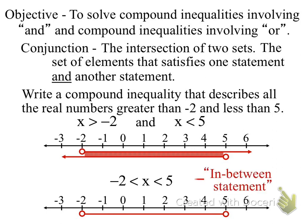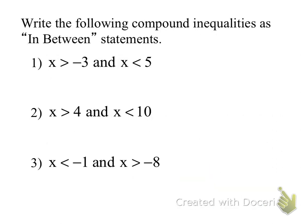We're going to practice writing in-between statements. All you have to do is take your numbers from the two inequalities — I know it's an intersection because they use the word 'and.' I take the lower boundary, negative 3, and the upper boundary, 5. I put x in the middle, always in order of the number line: negative 3, x, then 5. It's showing that negative 3 is smaller than x, and x is smaller than 5.